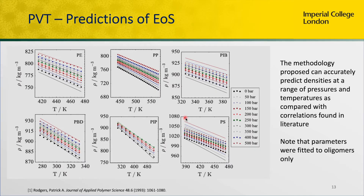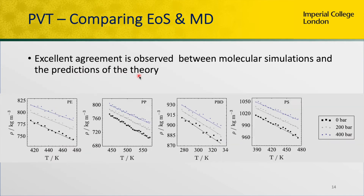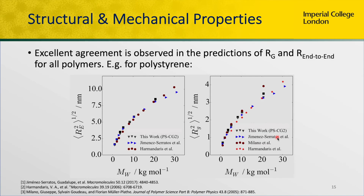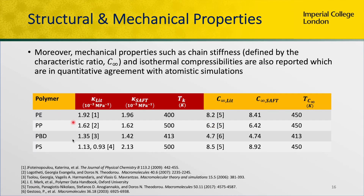In terms of homopolymer melts, we could predict their properties by fitting the parameters to oligomers. We could fit the PVT data very well and robustly, and although we just fitted parameters to two oligomers, we could accurately predict the densities of different polymers at a range of different temperatures and pressures. Not only could we do that with the equation of states, but we could also do this with molecular dynamics simulations, with very good correspondence between results from molecular simulations and those from the equation of states. Not only can we get PVT properties, we could also get excellent agreement in structural properties such as the radius of gyration and end-to-end distances, as well as mechanical properties such as the isothermal compressibility and the characteristic ratio, which describes the chain stiffness.